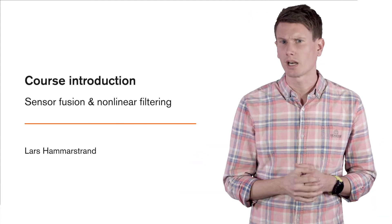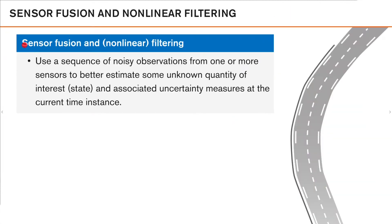So, let's dive right in. What do we mean by sensor fusion and nonlinear filtering? Well, one high-level definition is that we should use a sequence — usually a time sequence — of noisy observations from one or more sensors. If you use one sensor, we call it filtering, and if we use more sensors, we call it sensor fusion, as simple as that. The goal is to filter this sequence of noisy sensor observations to get a better estimate of some unknown quantity of interest, which we in this course will refer to as our state.